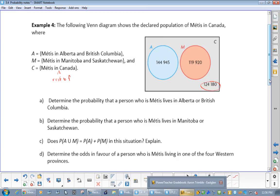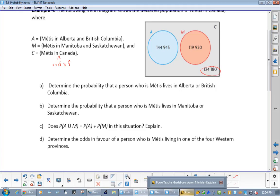So determine the probability that a person who is Métis lives in Alberta or British Columbia. This might be the only thing that might catch people, but probability is success over total. So how do we get total? Add these up. So remember, it's success over total. So Métis in Alberta and Saskatchewan is 144,945, and the total is 389,045. Determine the probability of the person who lives in Manitoba or Saskatchewan. Again, another tough question. 119,920 all over 389,045.